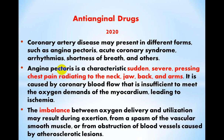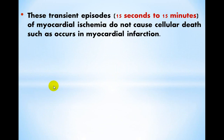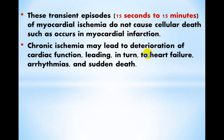The imbalance between oxygen delivery and utilization may result during exertion, from a spasm of the vascular smooth muscle, or from obstruction of blood vessels caused by atherosclerotic lesions — three causes in total. These transient episodes of about 15 seconds to 15 minutes of myocardial ischemia do not cause severe damage as occurs in myocardial infarction. However, chronic ischemia may lead to deterioration of cardiac function, leading to heart failure, arrhythmias, and sudden death.